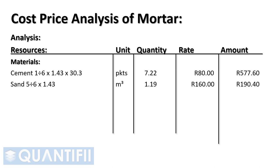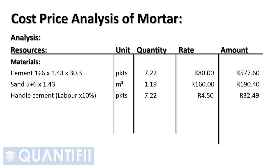Next, we will need 5 parts sand for our 1 to 5 mix, multiplied by 1.43, equals 1.19 cubic meters. The quantity can be multiplied by the rate of 160 rand per cubic meter, giving a total cost of 190.40 rand.